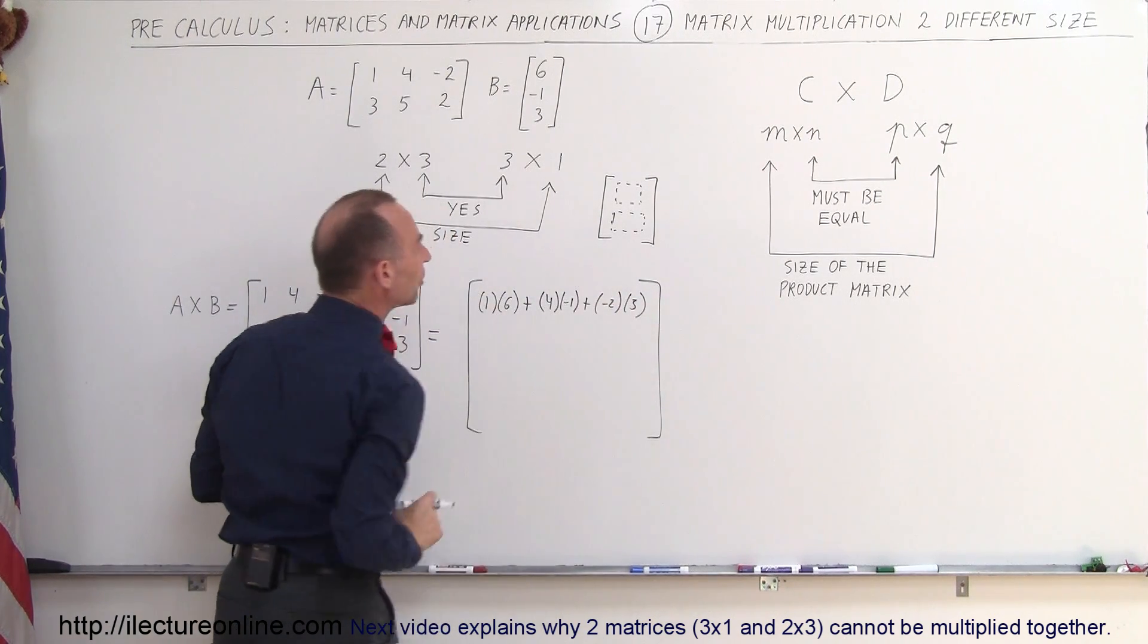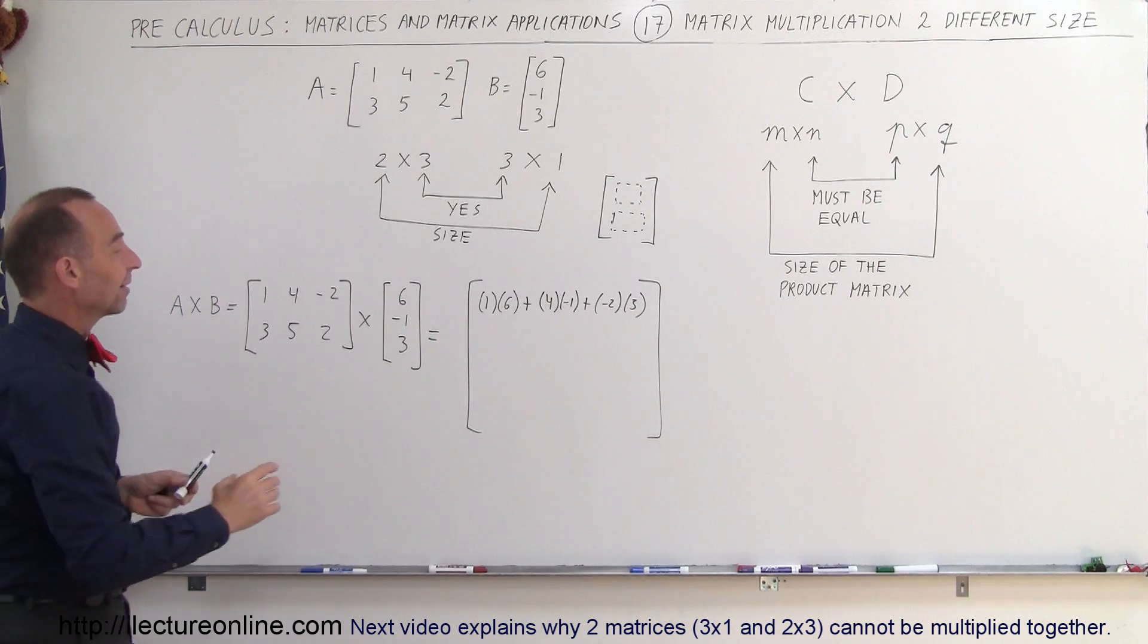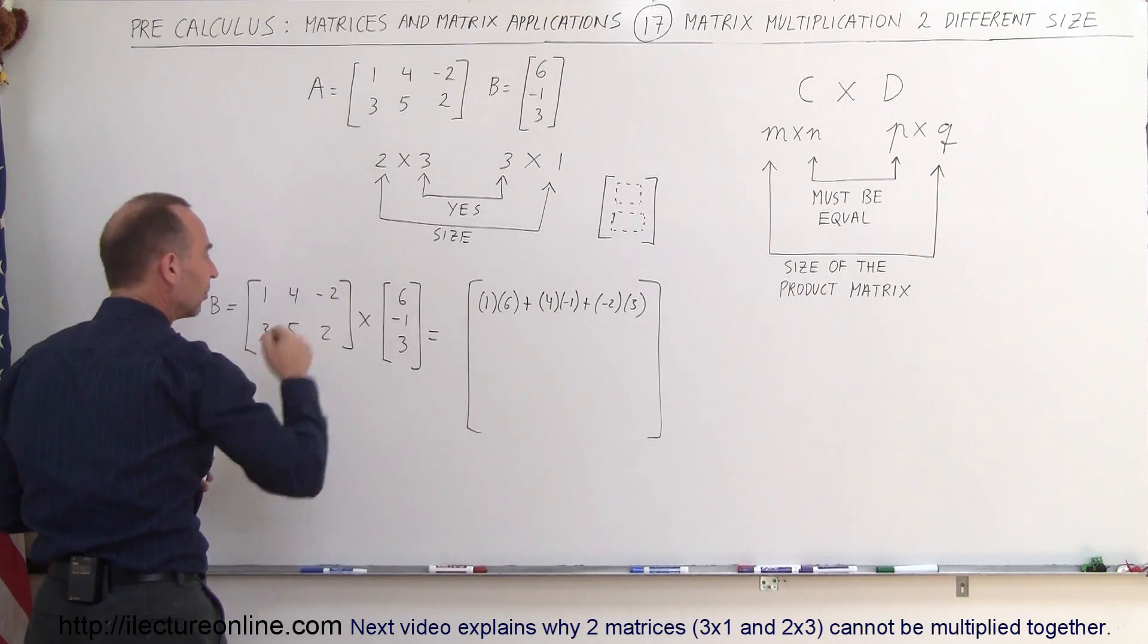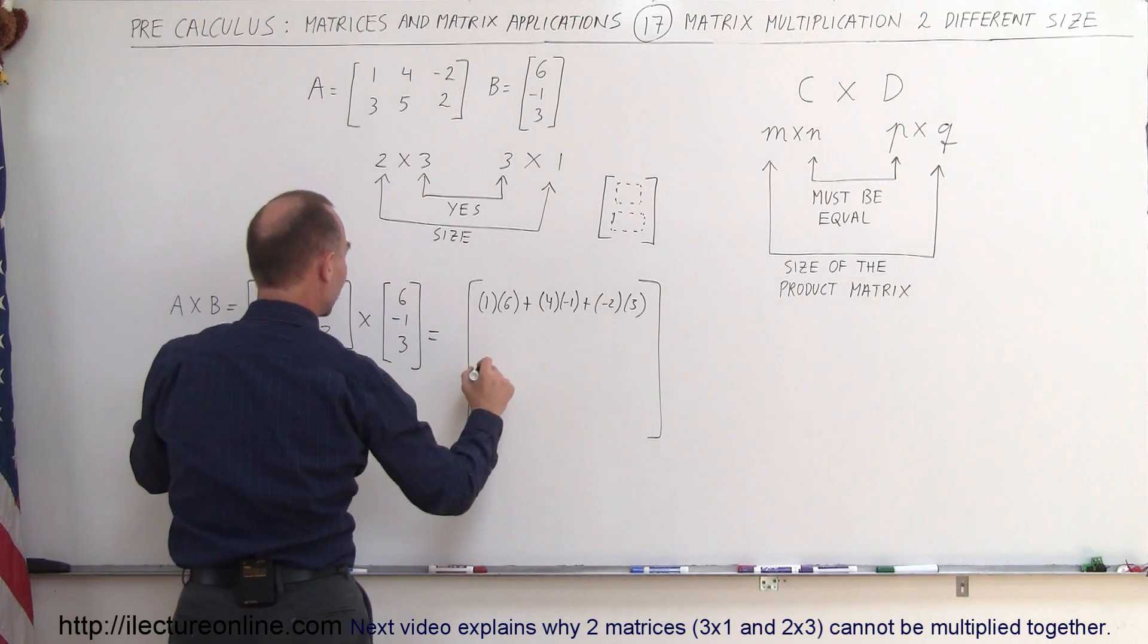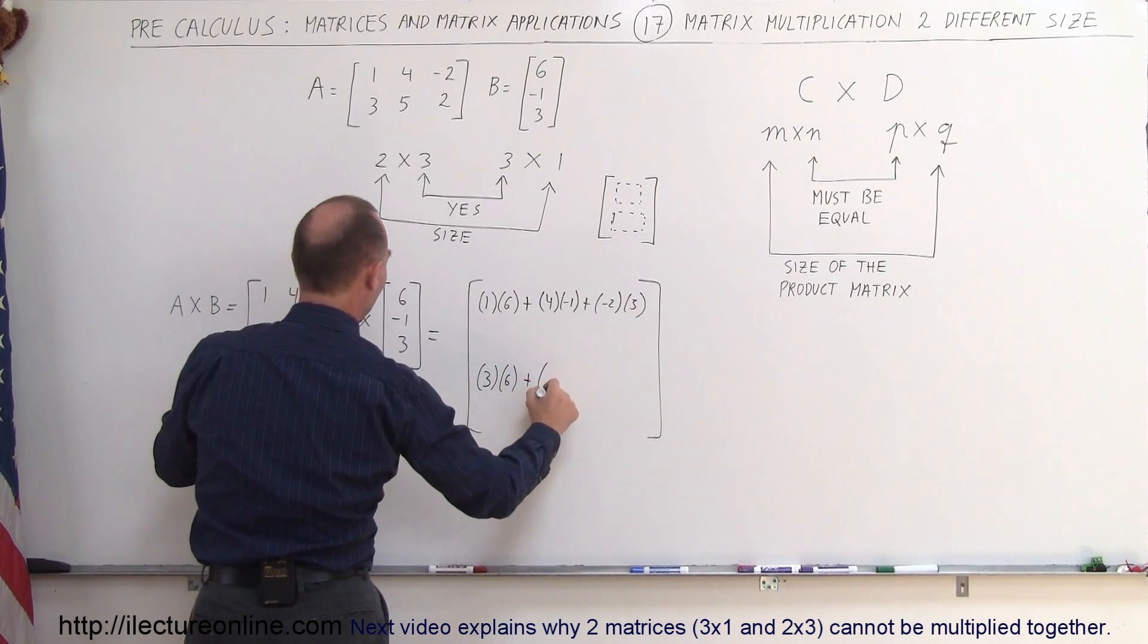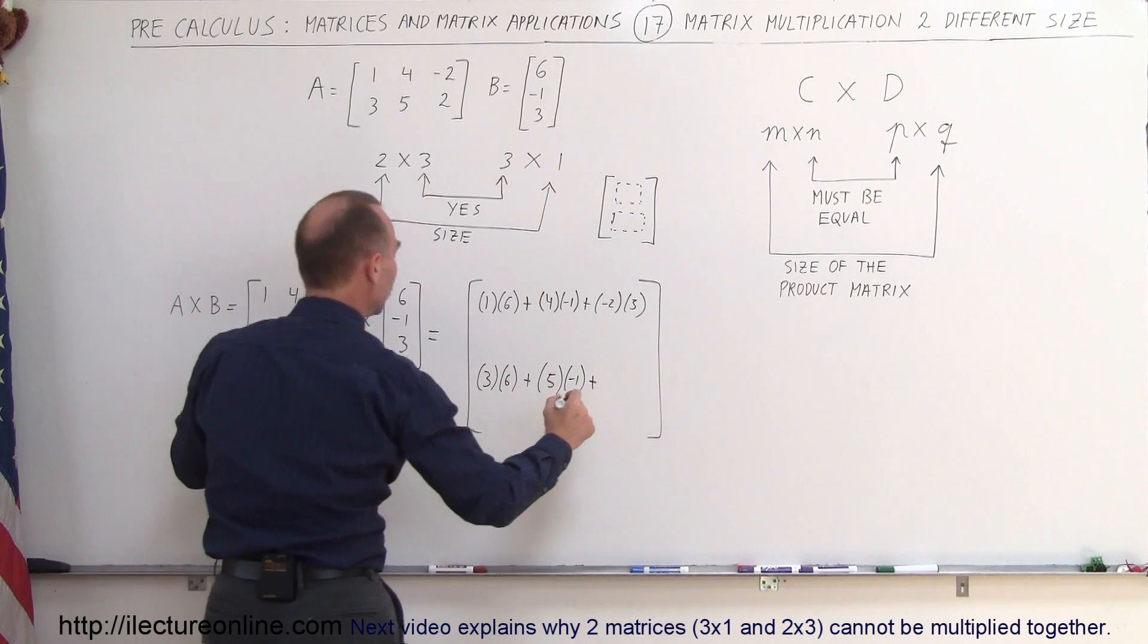So it's 1 times 6 plus 4 times the negative 1 plus a negative 2 times 3. And that will be the element, the first element or the top element of your resulting matrix. And now to get the second element, you will multiply the second row times the column. There's only one column here, so it will be 3 times 6 plus 5 times a negative 1 plus a 2 times 3.